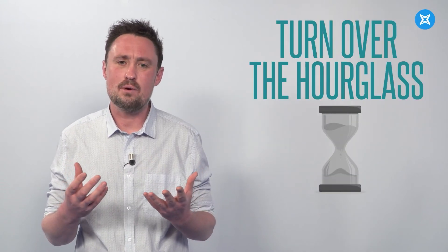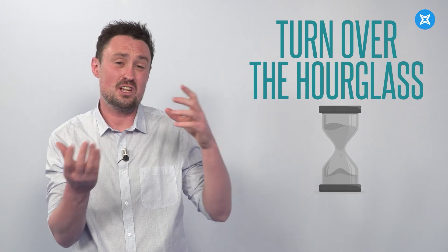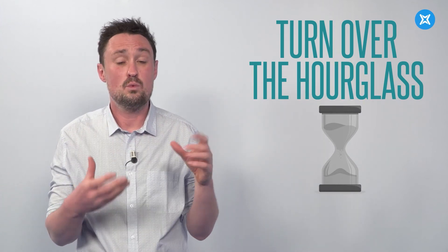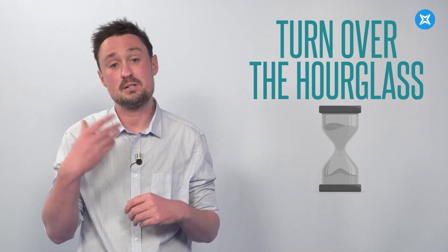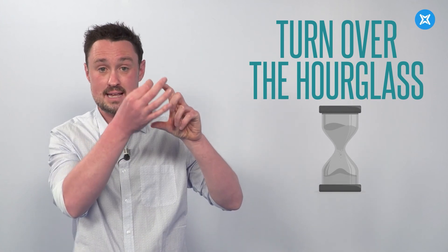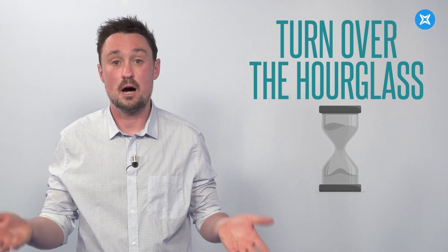And the final thing we talk about is an hourglass. An hourglass is this small little hourglass full of sand that generally dictates an amount of time that you have to do an activity. We use it in games such as Pictionary, where you have to draw something and the other person has to guess what you're drawing. You turn the hourglass, and when the sand reaches the bottom and there's no more sand left, your time is up.